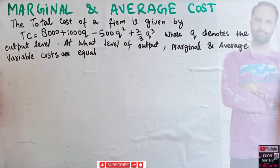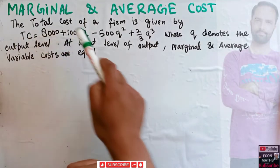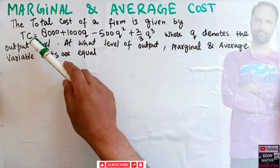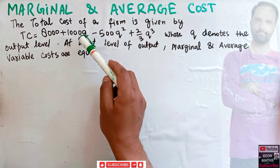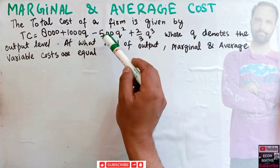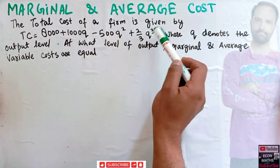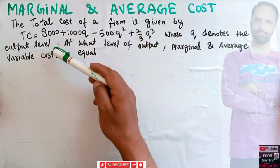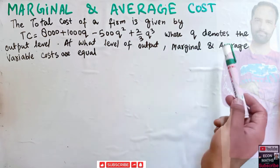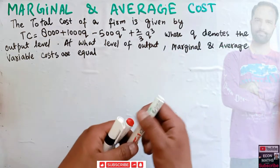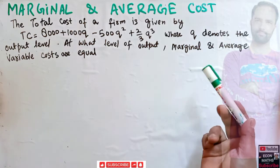Let us solve a question on marginal and average cost. The total cost of a firm is given by TC = 8000 + 1000Q - 500Q² + (2/3)Q³, where Q denotes the output level. We need to find the value of Q at which marginal cost equals average variable cost.